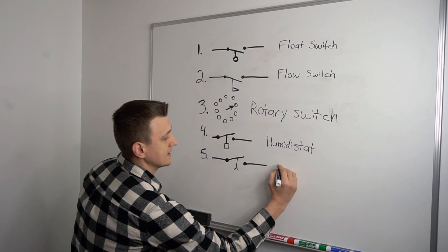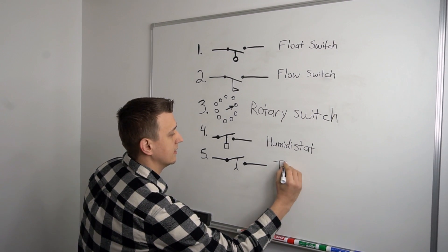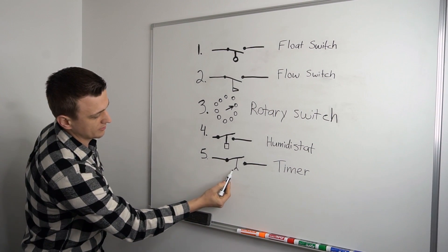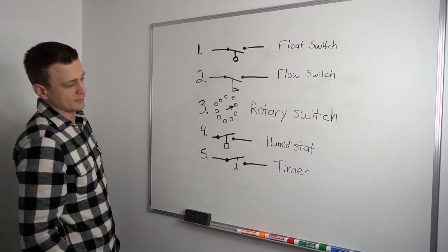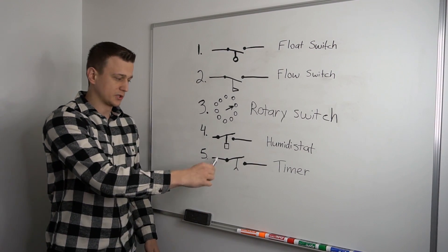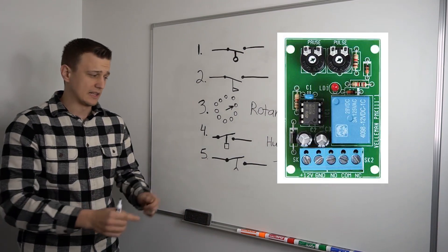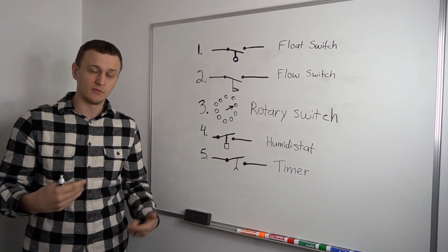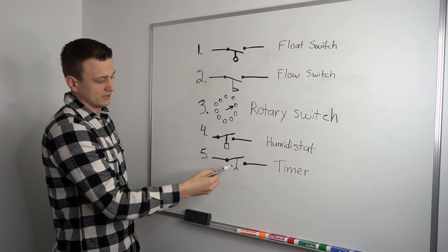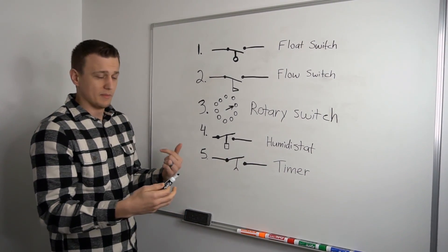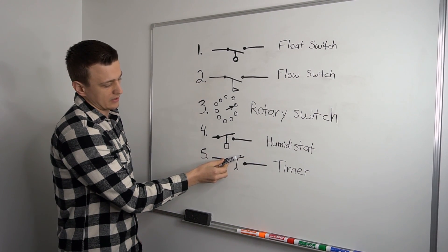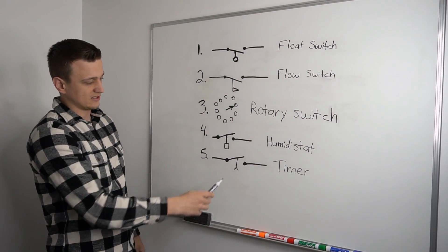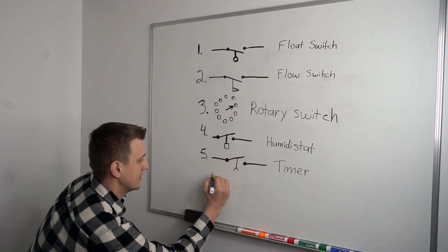This one right here is a timer. A timer switch. So whenever you see a line with like a triangle without the bottom piece there, that stands for a timer switch. And most of the time, timer switches like this can be found in time delay boards. A lot of times you'll find them in the control board in the condenser unit outside. It delays it by about five minutes before it starts. And once again, this is a timer. So as the minutes go by, this little switch starts to go down, down, down until it clicks and lets the power through and the unit turns on.